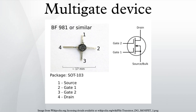Planar double-gate transistors employ conventional planar manufacturing processes to create double-gate devices, avoiding more stringent lithography requirements associated with non-planar vertical transistor structures. In planar double-gate transistors, the drain-source channel is sandwiched between two independently fabricated gate and gate-oxide stacks. The primary challenge in fabricating such structures is achieving satisfactory self-alignment between the upper and lower gates.